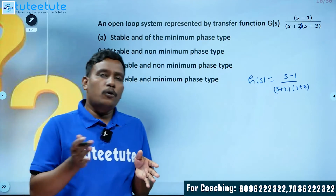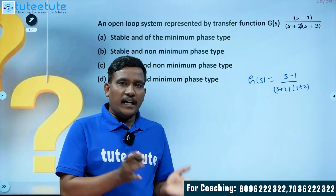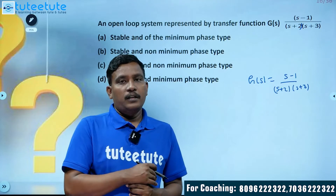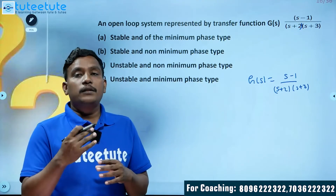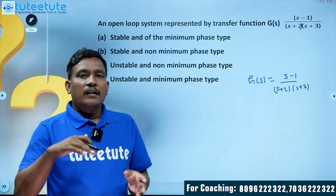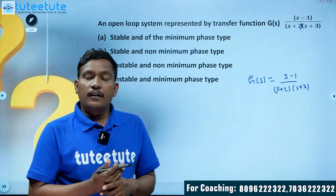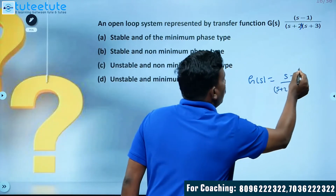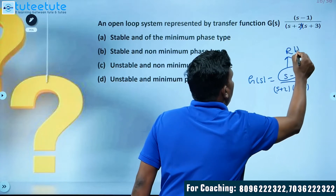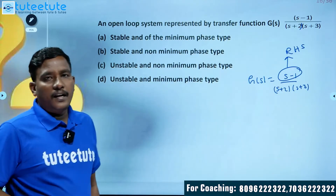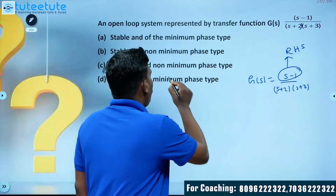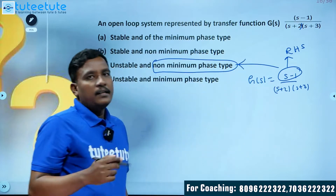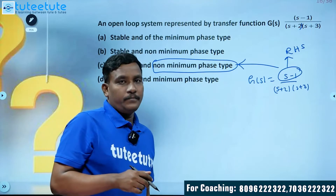We already discussed in theory: if all poles and zeros lie on the left side of the s-plane, then the system is called a minimum phase system and is also stable. If some zeros lie on the right side of the s-plane, then that system is called non-minimum phase. Here, one zero is lying on the RHS side, so it is a non-minimum phase type.